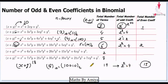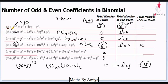I hope it is clear. We just need to find total number of terms, which is n+1. Total number of odd coefficients is 2 raised to power of the number of 1's in the binary representation, and even coefficients are total number of terms minus odd coefficients. But these conditions work under one condition: the coefficients within the bracket should both be odd. Otherwise it won't work.